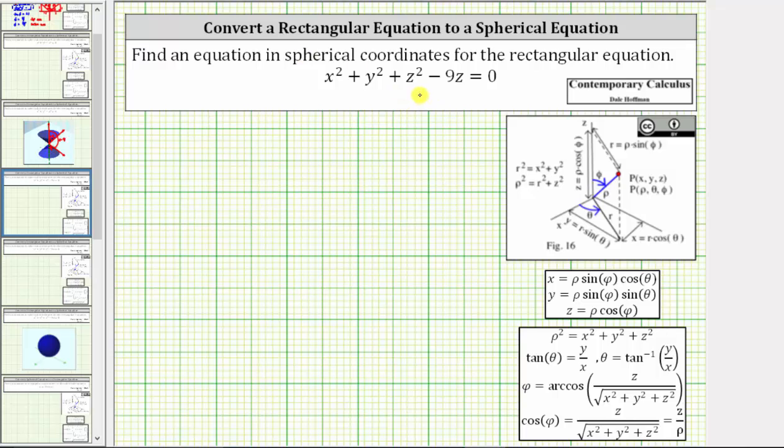To convert the equation to spherical coordinates, we need to perform substitutions using these equations here on the right so the equation only contains rho, phi, or theta.